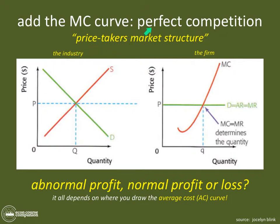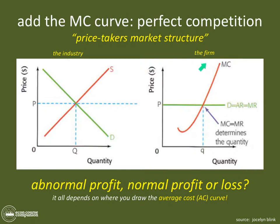Perfect competition is a market structure where firms have to take a price — and where do they take it from? The industry. A simple supply and demand diagram from microeconomics indicates a price, and that price must be taken by the firms. If you don't understand that, go back and check the previous videos.